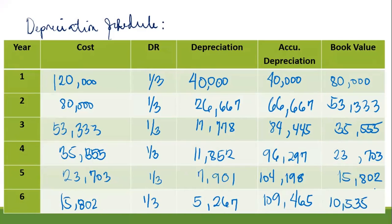Let's walk through the computation so you can follow your activity later. For Year 1: R = 120,000 × 1/3 = 40,000.